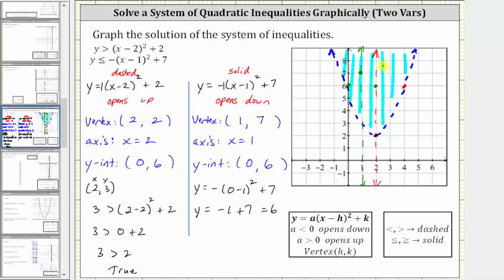This point is one unit to the left of the axis of symmetry, so there must be a corresponding point one unit to the right of the axis of symmetry. And now we can graph the second parabola. Remember, this is going to be a solid parabola, which will look something like this.